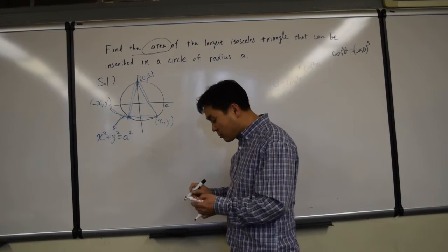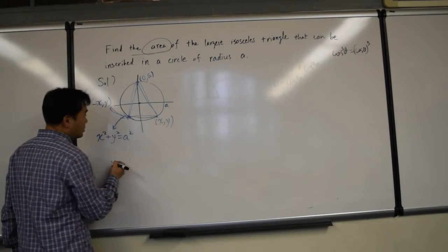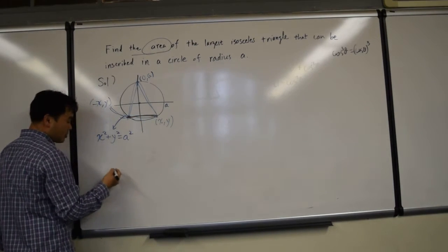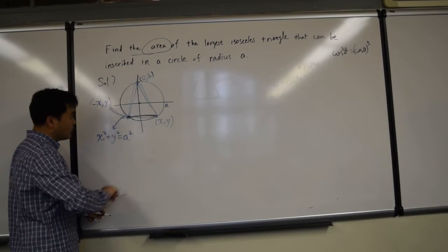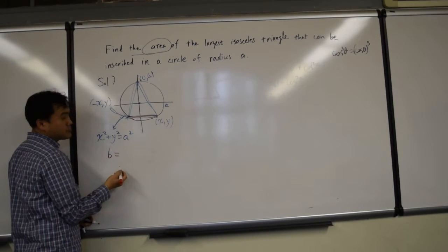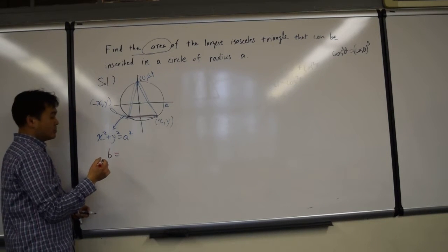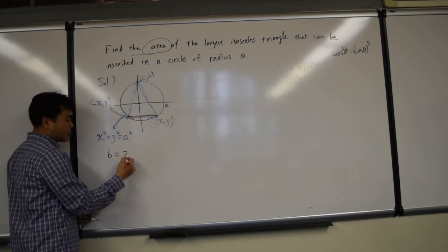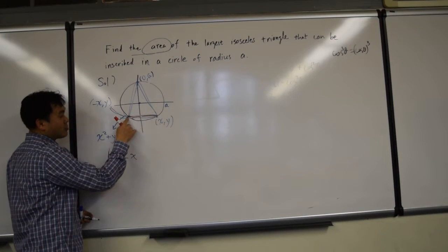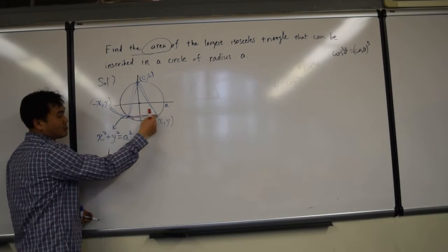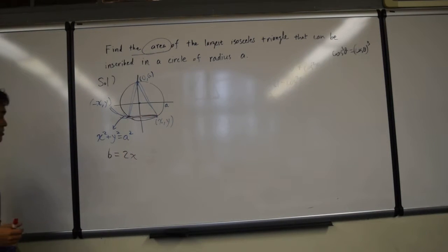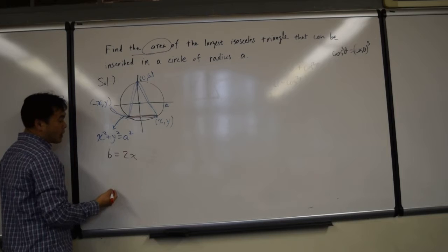Now, let's think about the area of this function. First, give me the base length. Base length b is 2x, right? If you go x to the right, you're here. If you go x to the left, you're here. So this length is x, that's x. In total, the base length is 2x.